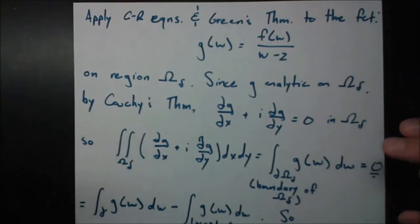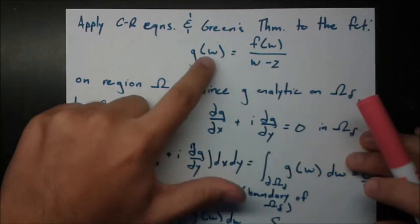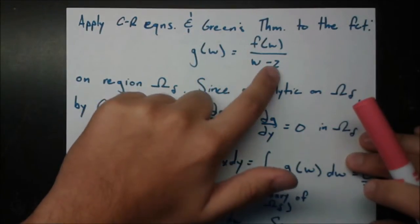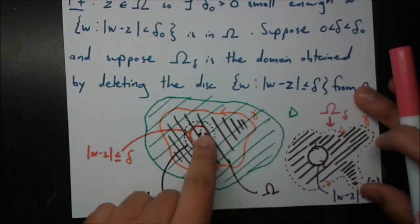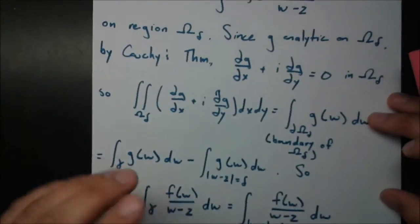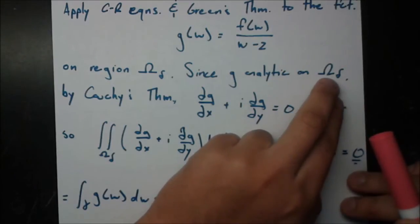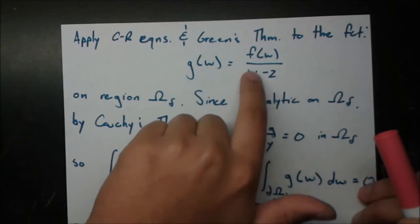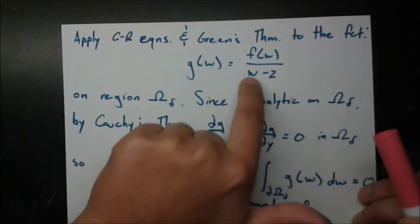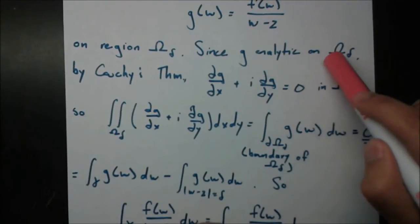We apply Cauchy's theorem to the new function g(w) = f(w) / (w − z), where z was the center of the disk we deleted. Since z is no longer part of the domain, g is analytic on omega_sub_delta. The only way g wouldn't be analytic is if the denominator were zero — that happens only if w equals z — but we've cleverly removed z from the domain, so there are no problems. Therefore g is always analytic on omega_sub_delta.